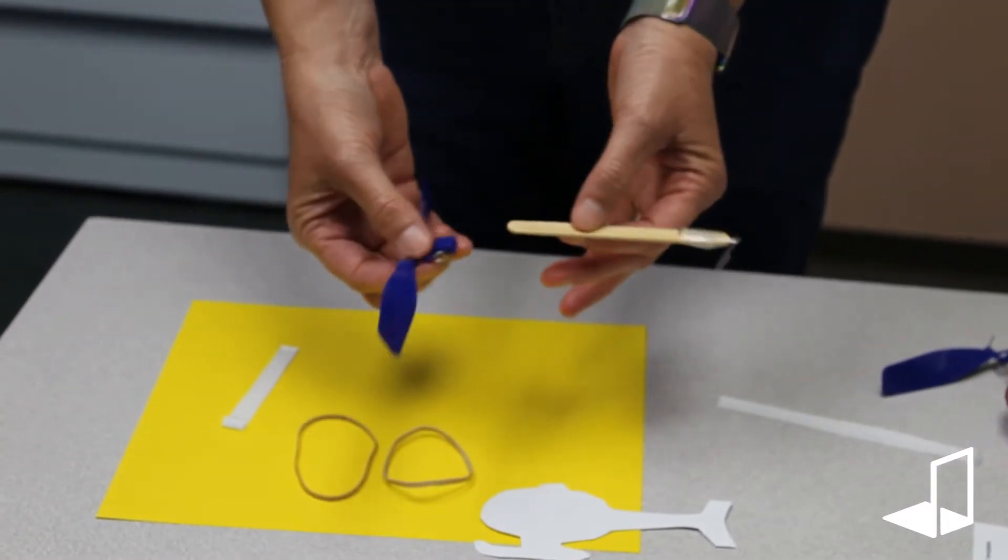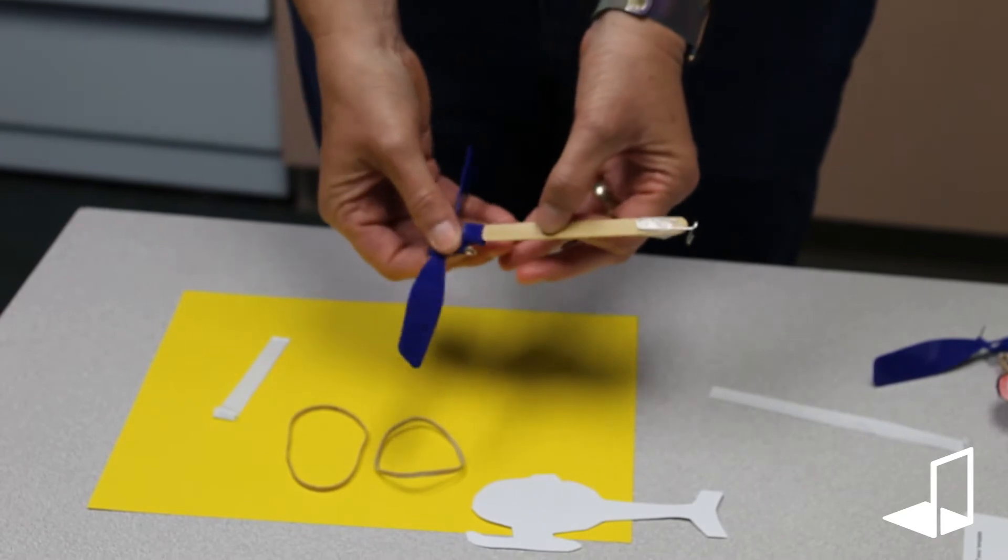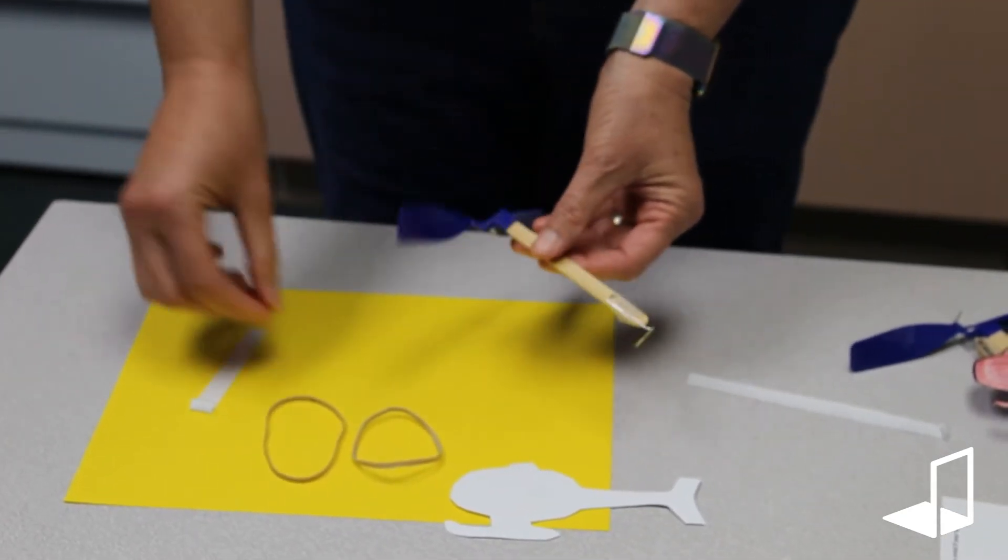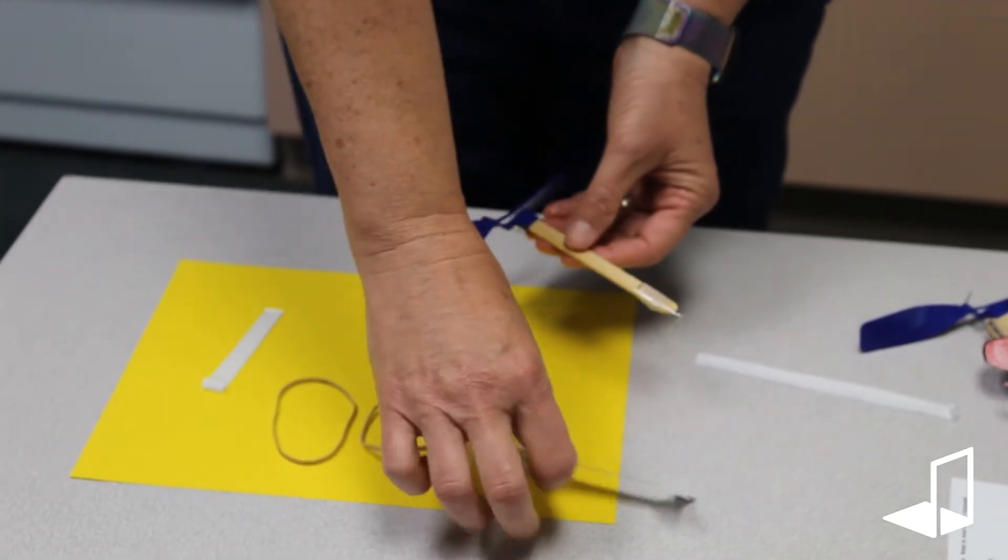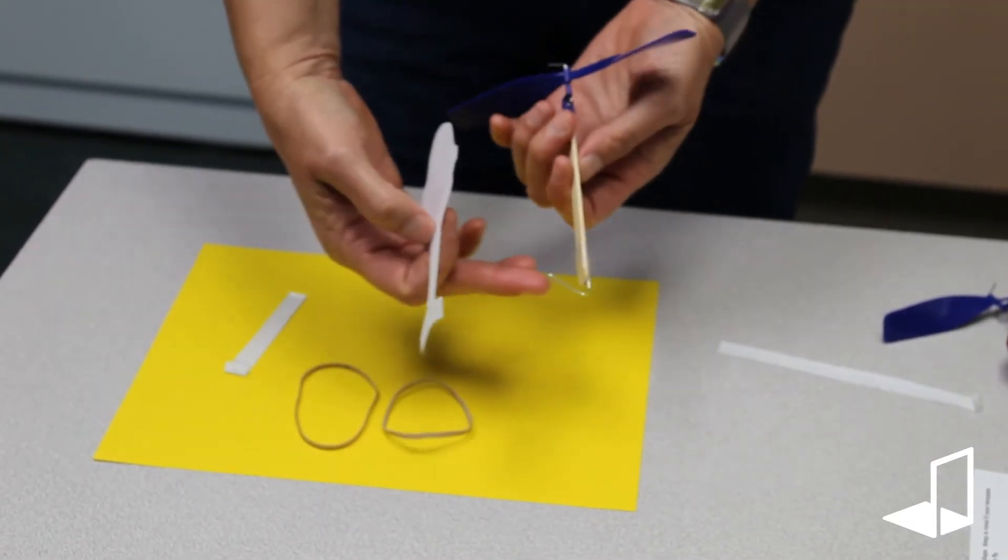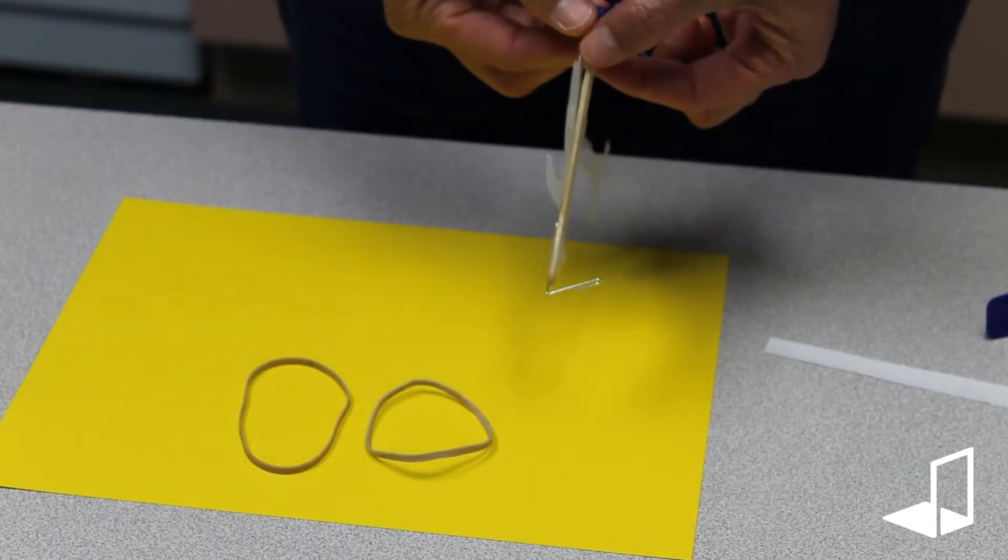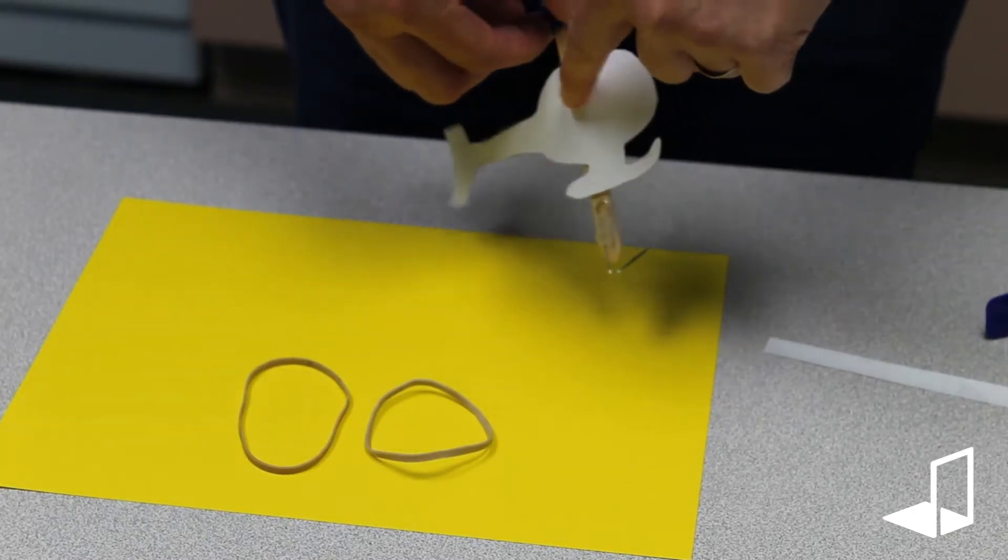You can put the propeller—it should fit right on your craft stick. You're going to tape your helicopter on the opposite side of your paper clip. That's really important: your paper clip on one side, your helicopter taped to the other side.